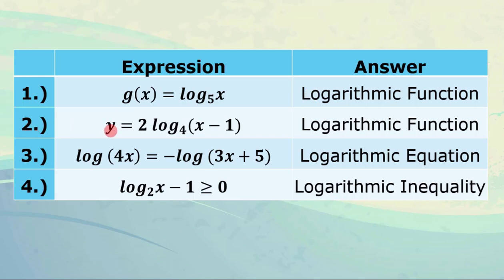Number 2: y equals 2 times log of x minus 1 to the base 4. Again, still a logarithmic function. Number 3: log of 4x equals negative log of 3x plus 5 to the base 10. If the base cannot be seen, it is understood that the logarithmic expression is of base 10. So we have a logarithmic equation. Number 4: log of x minus 1 to the base 2 is greater than or equal to 0. Obviously, because of the inequality symbol, we have a logarithmic inequality.